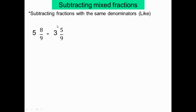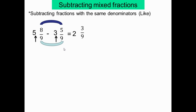Alors pour les fractions mixtes: on soustrait d'abord les nombres entiers, par exemple 5 moins 3 égal 2. Les dénominateurs sont les mêmes, donc le dénominateur ne change pas. Ensuite on soustrait les numérateurs: 8 moins 5 égal 3. La réponse est 2 et 3/9. Il faut simplifier: 3/9 — on divise numérateur et dénominateur par 3. 3 divisé par 3 égal 1, 9 divisé par 3 égal 3. La réponse finale est 2 et 1/3.